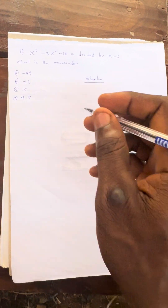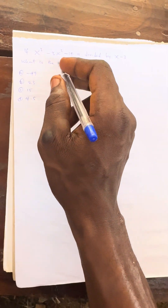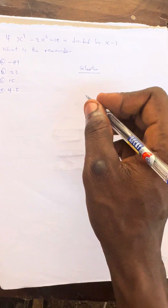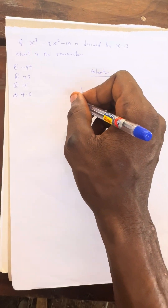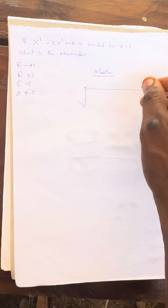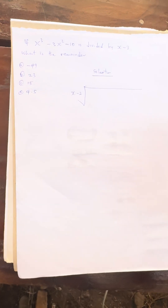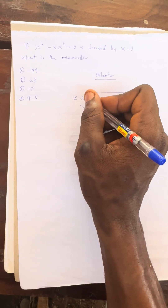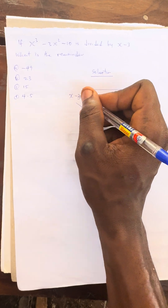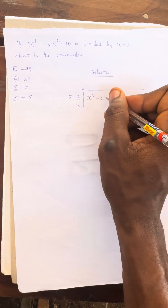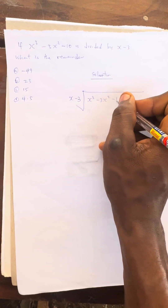The question says: if x cubed minus 3x squared minus 10 is divided by (x minus 3), what's the remainder? So let us divide it. Let's use long division to solve first, then we are going to solve using the calculator method as well. So we have x cubed minus 3x squared minus 10 inside.